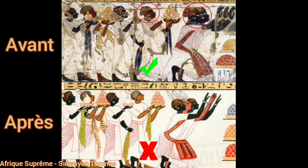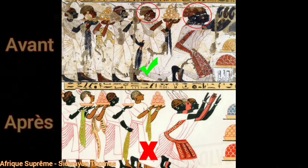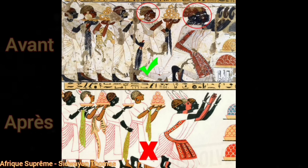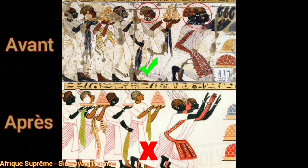Sur cette image, nous avons la fresque originelle en haut, avant le blanchiment, et en bas, la fresque après le blanchiment. Vous constaterez que plusieurs personnages noirs ont été blanchis, et que les falsificateurs ont aussi ajouté un blanc parmi les trois premiers personnages. C'est de cette manière que les Européens s'insèrent dans l'histoire des Africains : tout d'un coup apparaît un personnage blanc dans des fresques qui n'en contenaient pas.